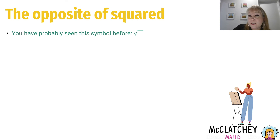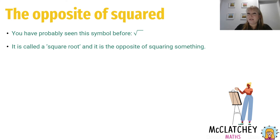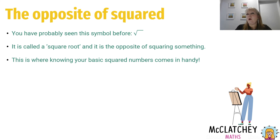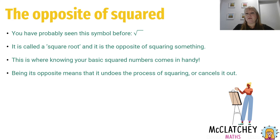Now let's talk about the opposite of squaring — the square root. You've possibly seen this funny-looking symbol before; it looks a little bit like a tick. If you've got a calculator, it's a good idea to find that button because you're going to need it as you go through school. It's called the square root and it's basically the opposite of squaring something. Inside your calculator, every possible number has been stored and the calculator has worked out what the opposite of squaring that number is — the square root. This is where knowing your basic squared numbers comes in handy, because when you're asked to find the square root of something, it becomes very quick and easy.